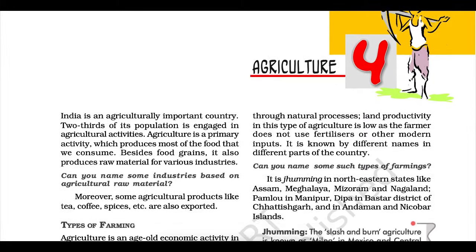Oil seeds. In 2008, India was the second largest producer of groundnut in the world after China. In rapeseed, India was the third largest producer in the world after Canada and China in 2008. Different oilseeds are grown covering approximately 12% of the total cropped area of the country. Main oilseeds produced in India are groundnut, mustard, coconut, sesame (til), soya bean, castor seeds, cotton seeds, linseed, and sunflower. Most of these are edible and used as cooking mediums. However, some are also used as raw material in production of soap, cosmetics, and ointments. Groundnut is a Kharif crop and accounts for about half of the major oilseeds produced in the country. Gujarat was the largest producer of groundnut, followed by Andhra Pradesh and Tamil Nadu in 2011-12. Linseed and mustard are Rabi crops. Sesame is a Kharif crop in North India and a Rabi crop in South India. Castor seed is grown both as Rabi and Kharif crop.